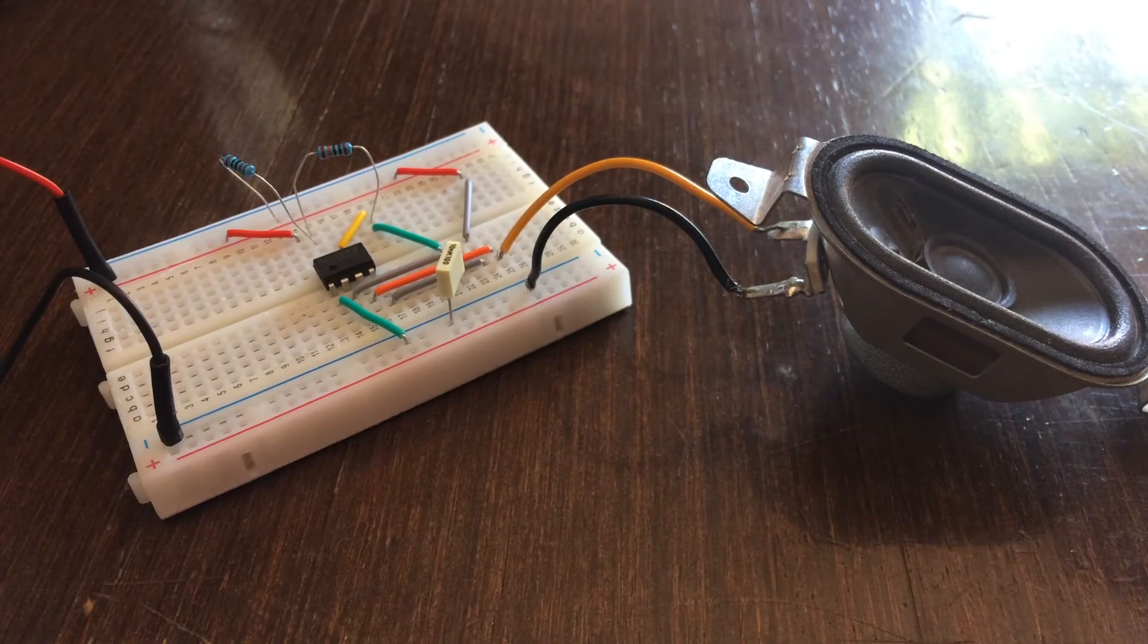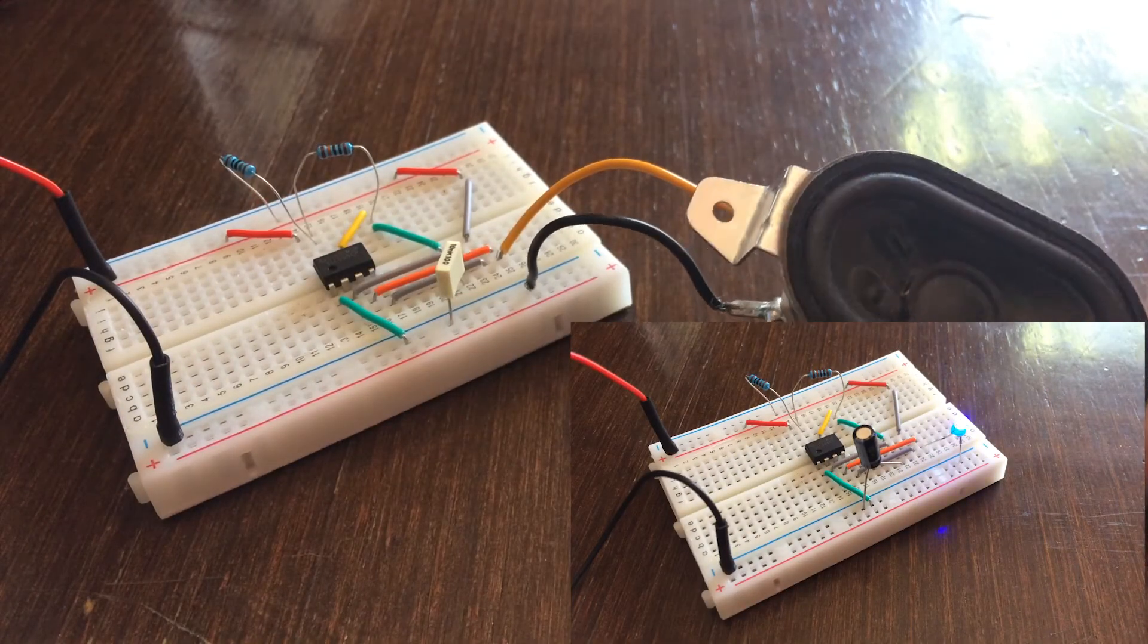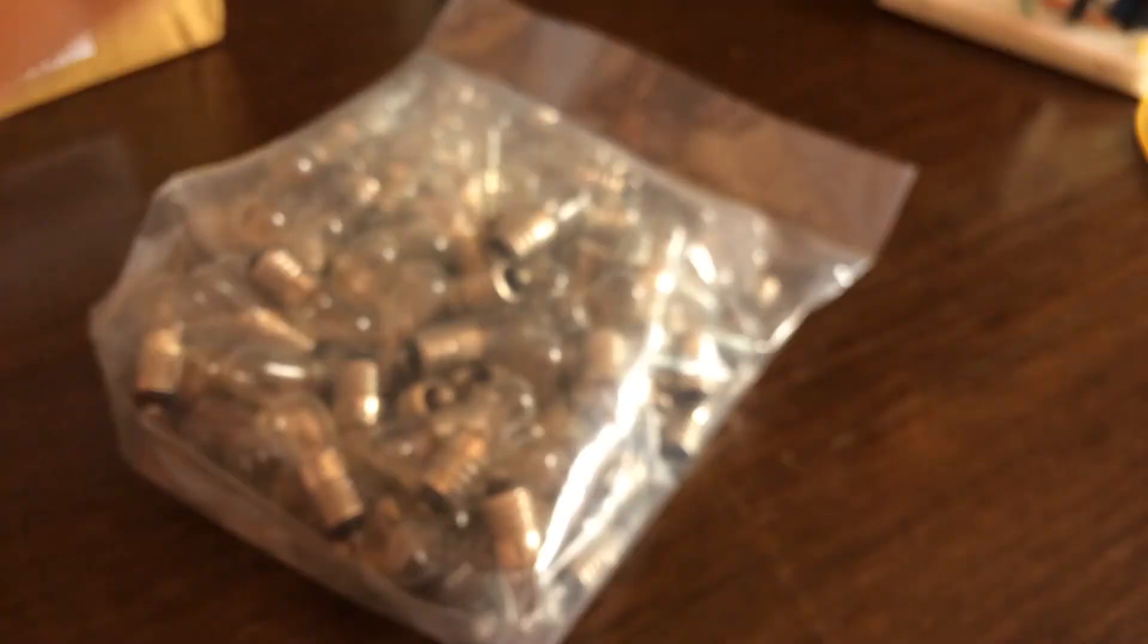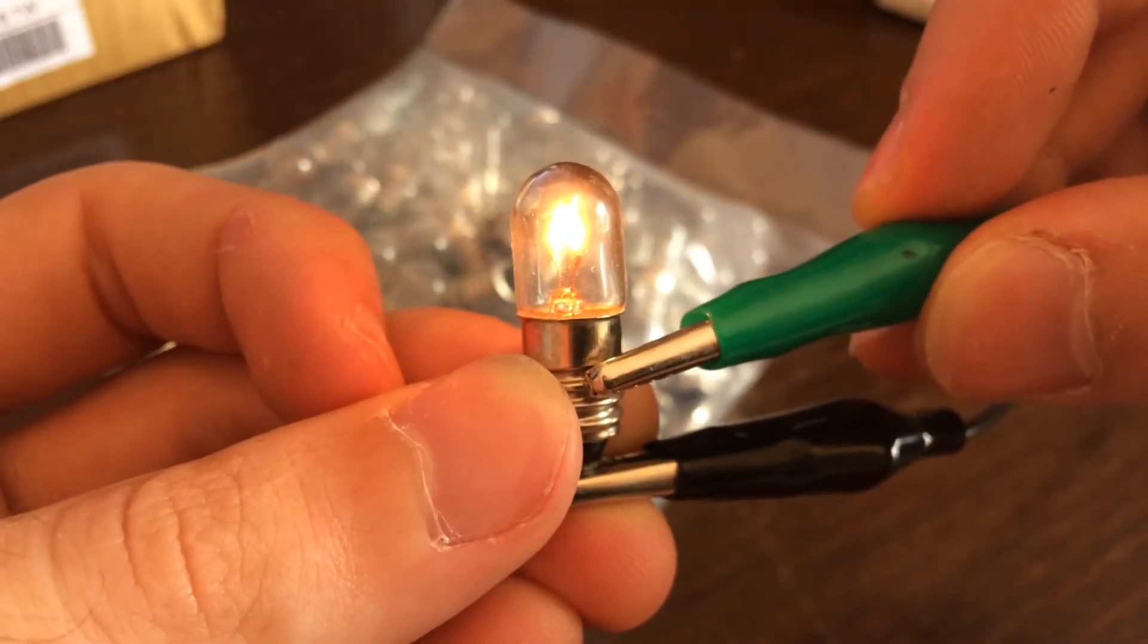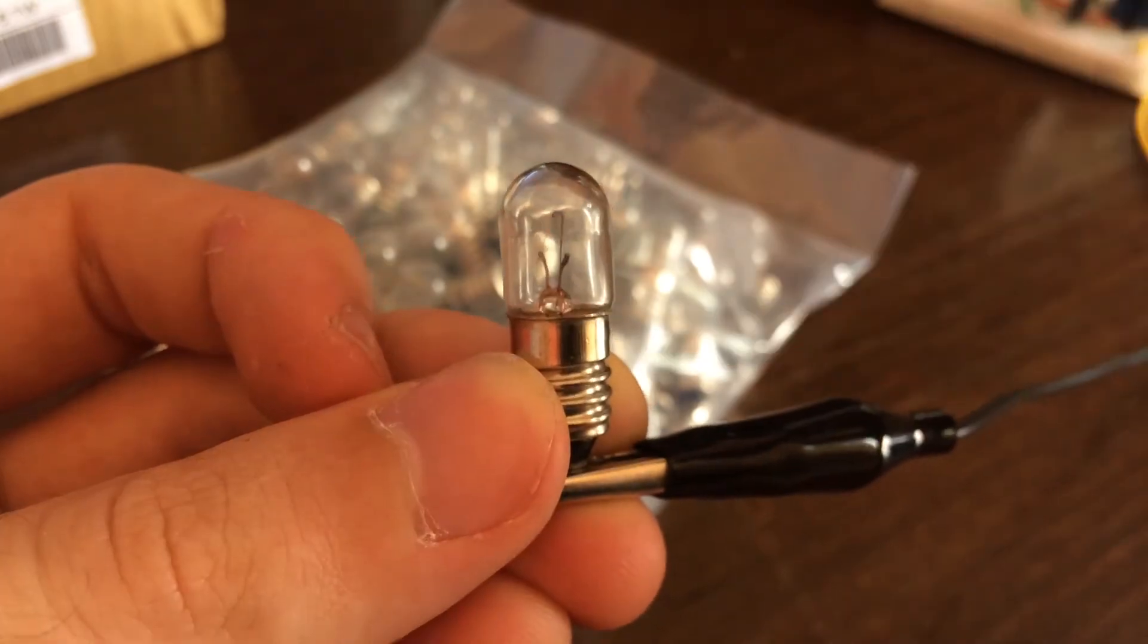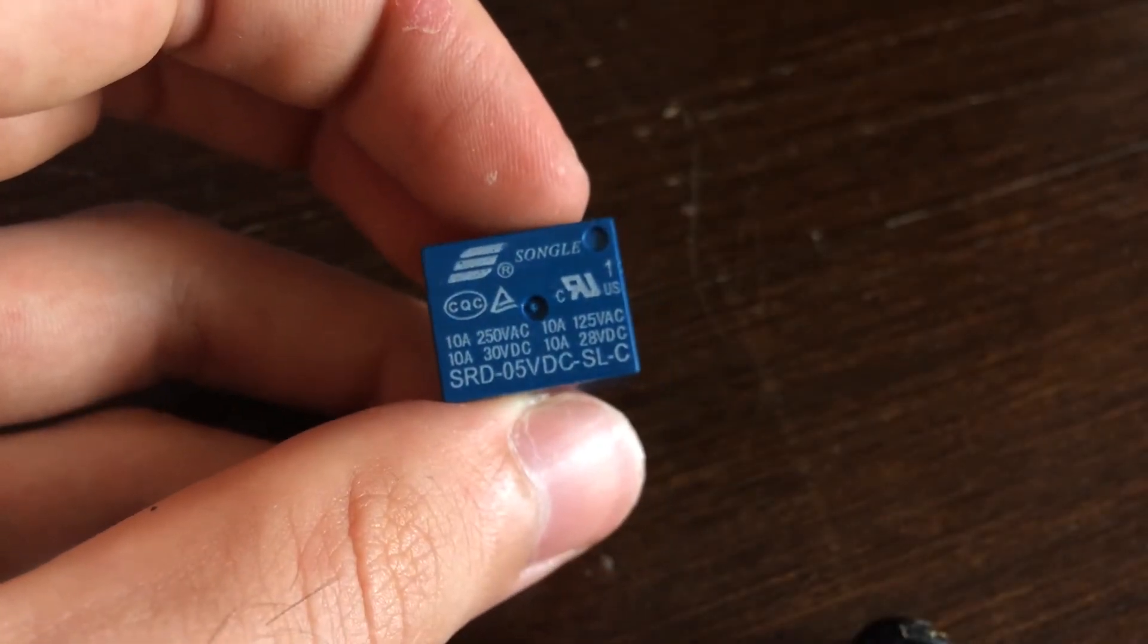The 555 timer itself can power small loads such as single LED or low power speaker without a problem, but if you want to control some heavier loads such as incandescent light bulbs, you will have to use a relay, for example, to turn it on and off.